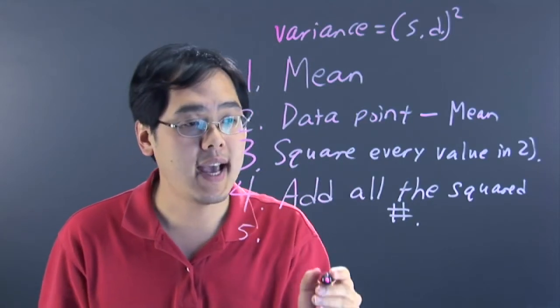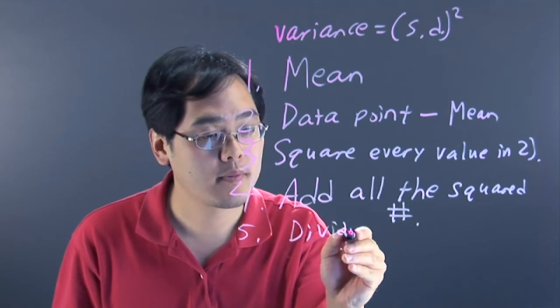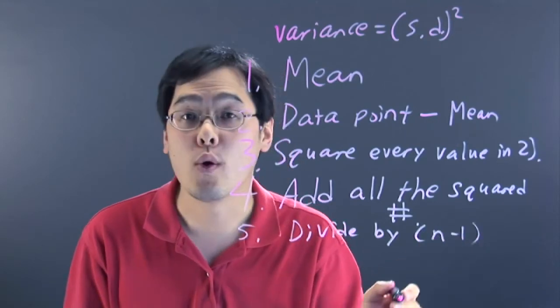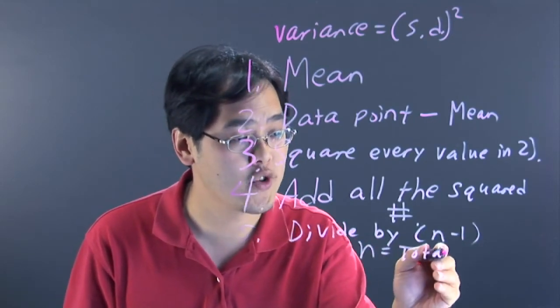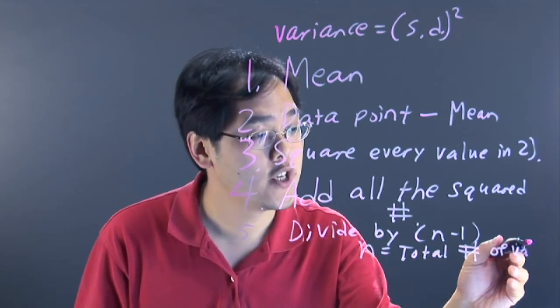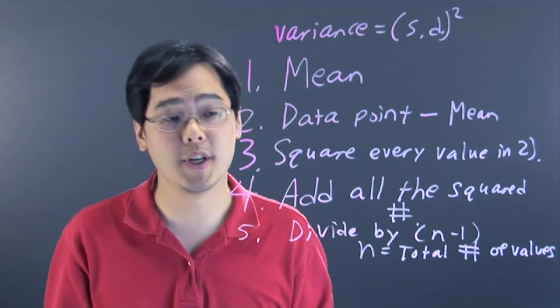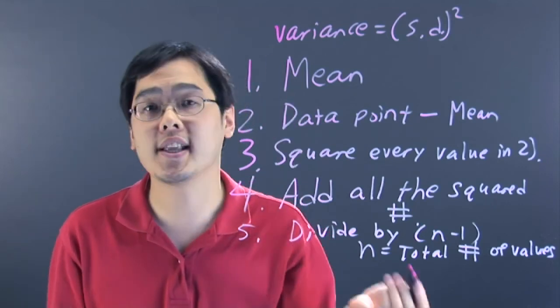And then lastly, you want to divide by n minus 1. Now what is n? n refers to the total number of values that you have. So if you have 12 data points, your n would be 12. Or if you have 20, then your n would be 20, and 20 minus 1 is going to be 19. But these are the steps on finding the variance.